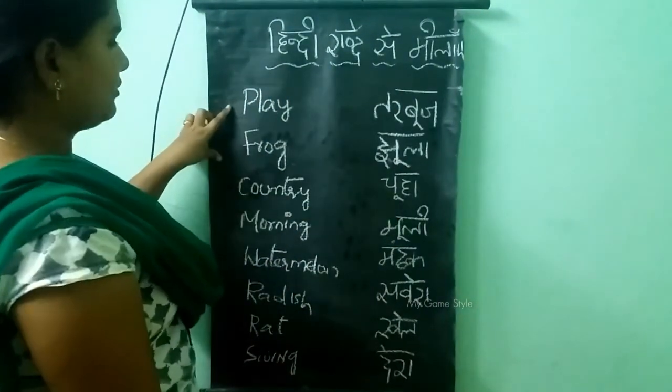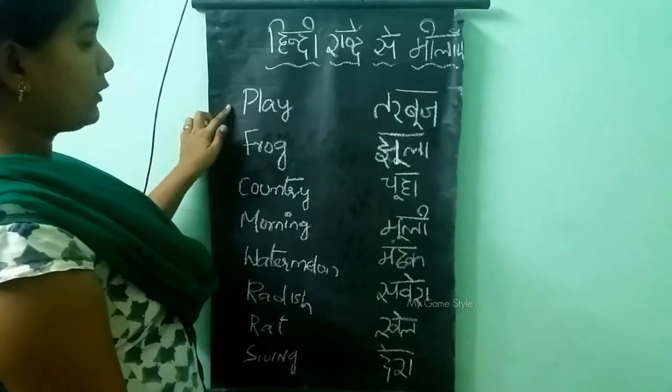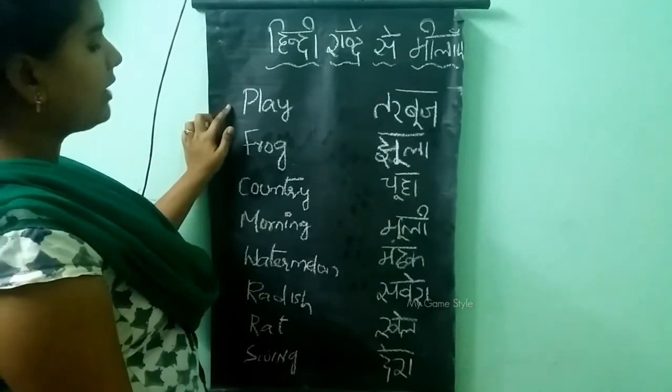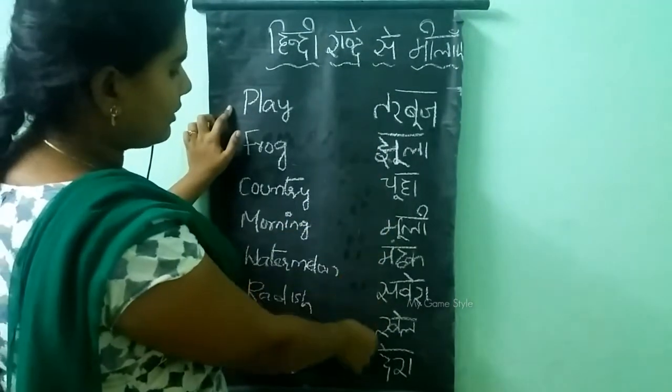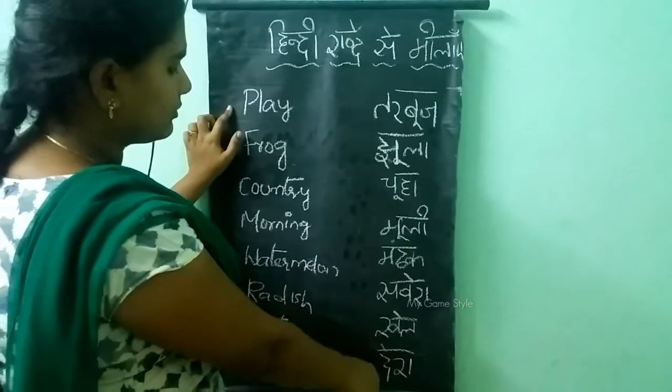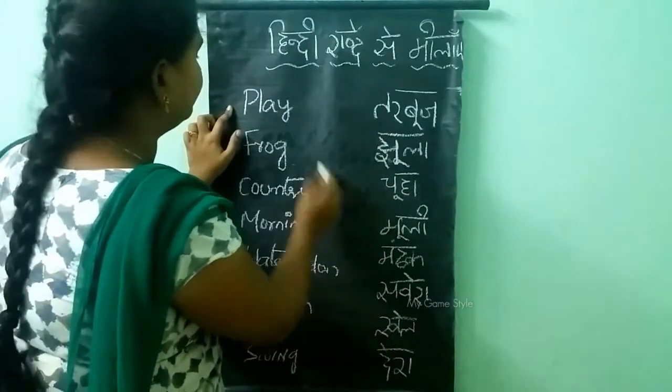Plague. Plague ko kahate hai? Kale. Where is Kale? Here.